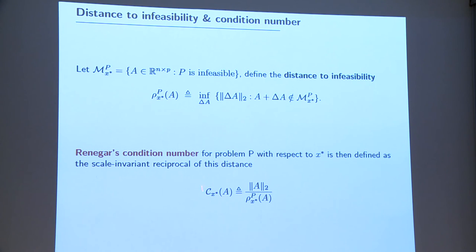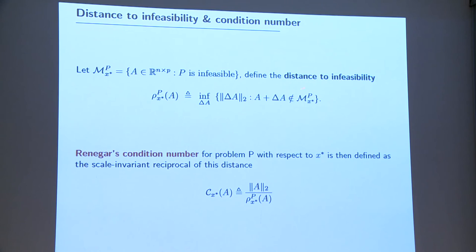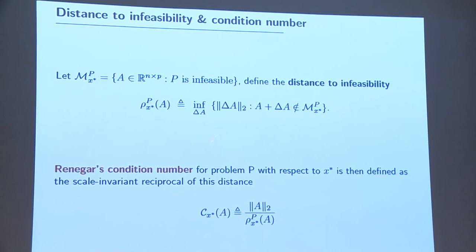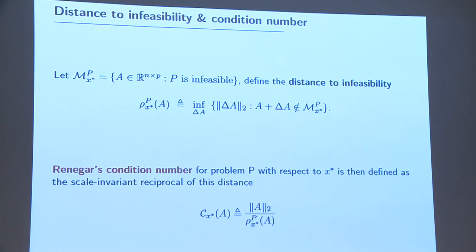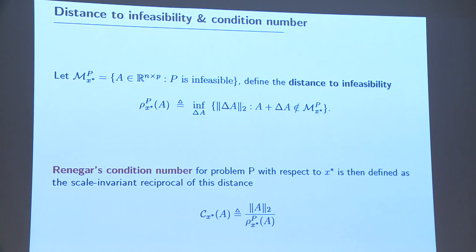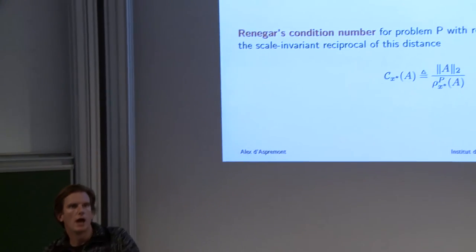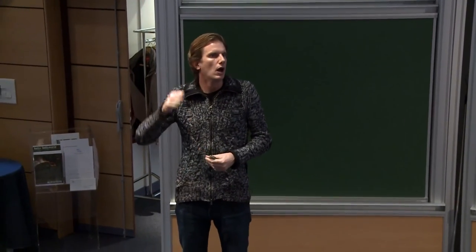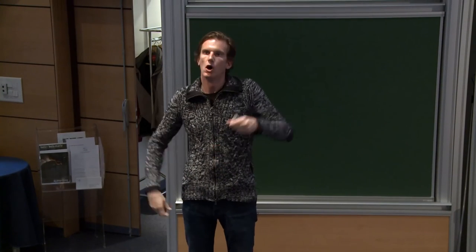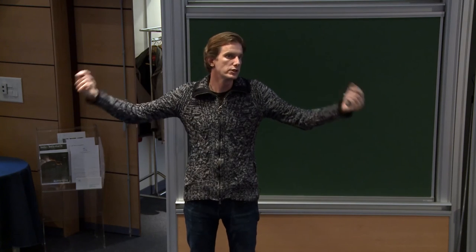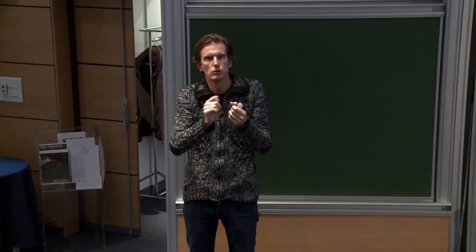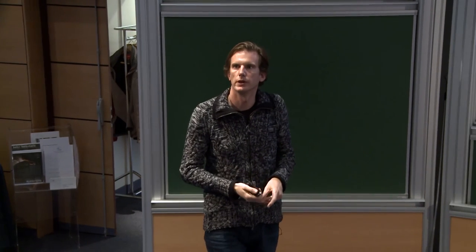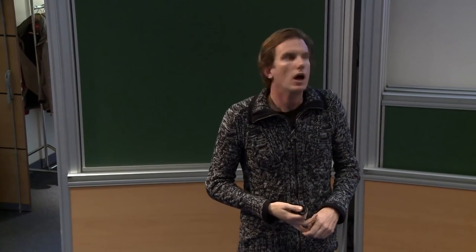We can say very fine things — we have a very fine way of characterizing the complexity of solving such an alternative conic linear system. This complexity description is written in terms of the distance to infeasibility: essentially the minimum perturbation you need to introduce to the matrix A to make your problem infeasible, or symmetrically, the minimum perturbation to make the problem feasible. Problems that are clearly feasible or clearly infeasible will be much easier to solve than problems near the region where feasibility starts to break down.